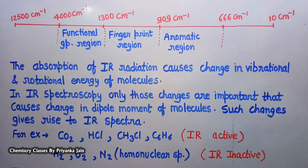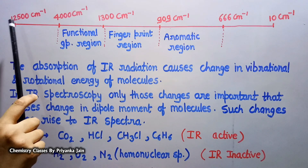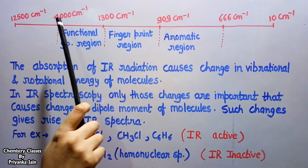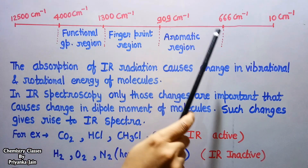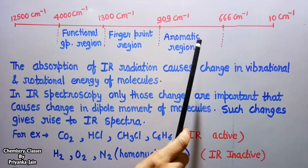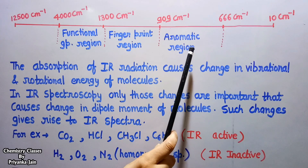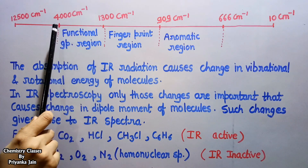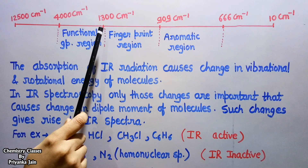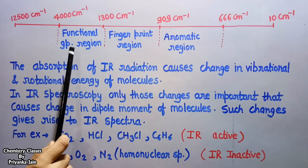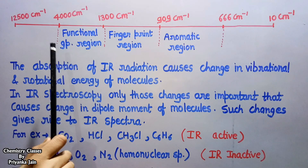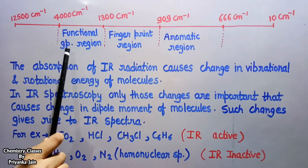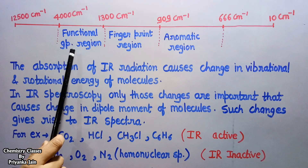The range of IR radiation extends from 12,500 to 10 cm⁻¹. Of this, the region from 4,000 to 666 cm⁻¹ is most important in organic chemistry for the identification of molecules. The region from 4,000 to 1,300 cm⁻¹ is known as the functional group region, because most functional groups in organic chemistry give their peaks — their characteristic absorption — in this region.